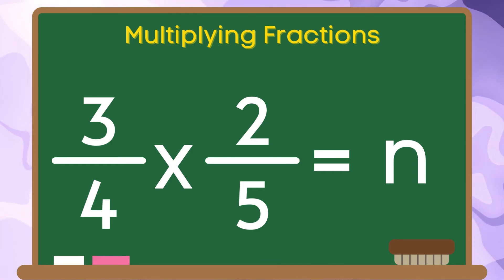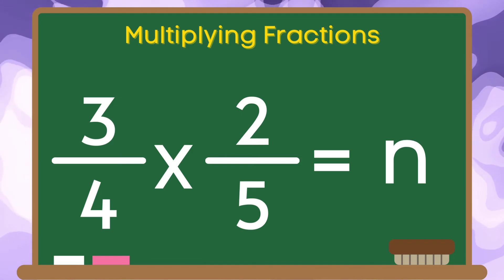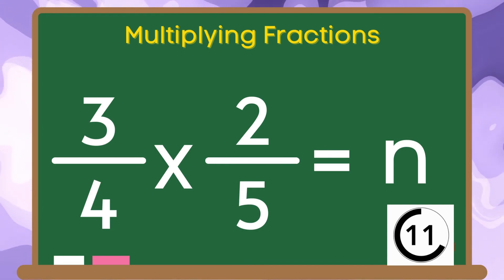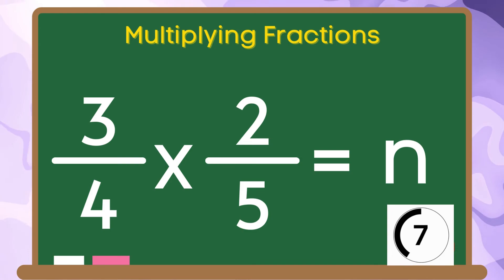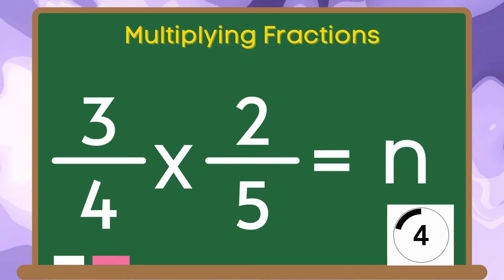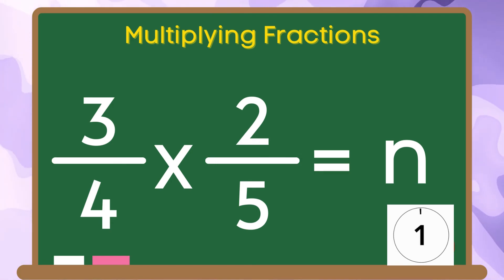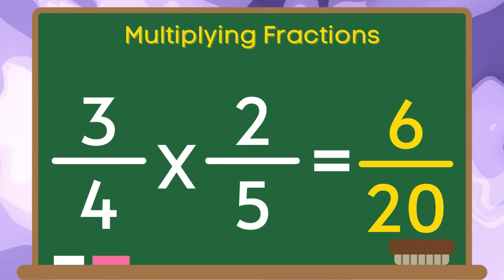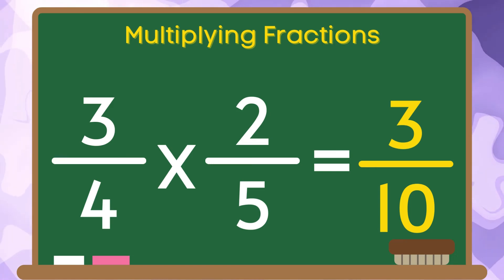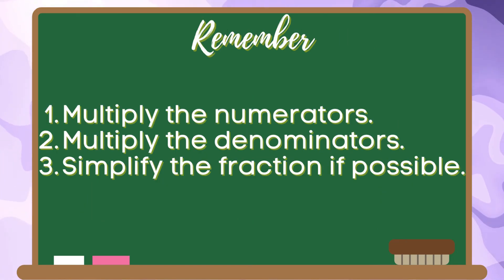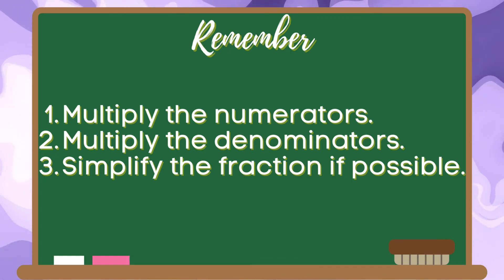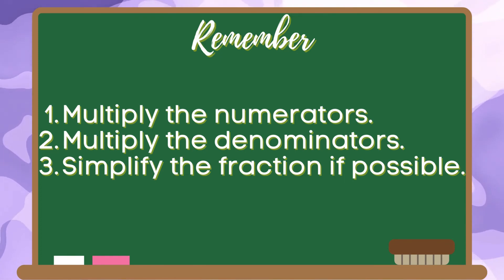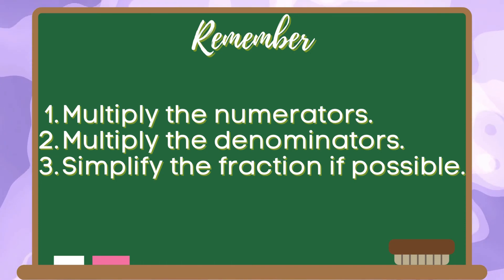And for the last example, let's get the product of 3 fourths and 2 fifths. The correct answer is 6 over 20 or 3 tenths. Remember, to get the product of fractions, first multiply the numerators, and third, simplify the fraction if possible.